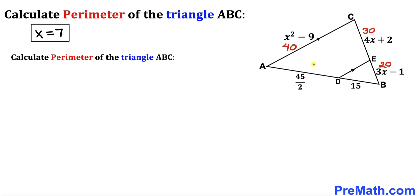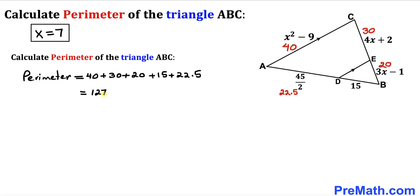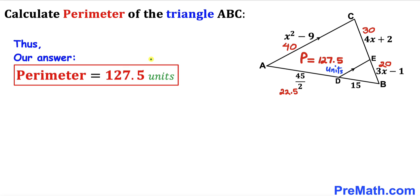Here's our final step — let's calculate the perimeter of triangle ABC. Note that AD equals 45 divided by 2 can be written as 22.5. Adding up all boundary lengths: 40 plus 30 plus 20 plus 15 plus 22.5 gives us 127.5 units. So the perimeter of triangle ABC is 127.5 units.